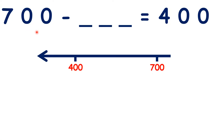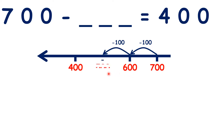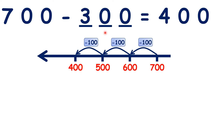Here we have 700 minus something equals 400. On a number line we can count back from 700 to 400. Because 700 and 400 are both multiples of 100, we can count back in hundreds: 700 take away 100 is 600, 600 take away 100 is 500, and 500 take away 100 is 400. We counted back in steps of 100 three times, which makes 300, so 700 minus 300 is 400.